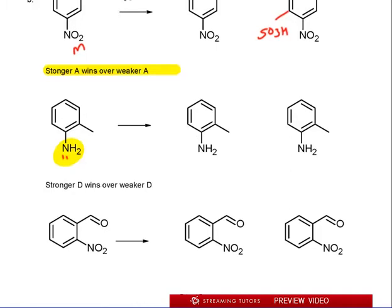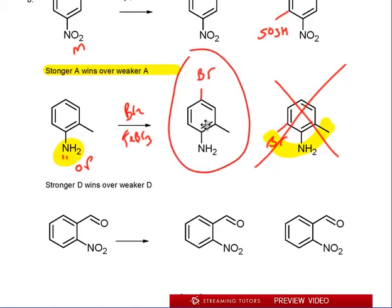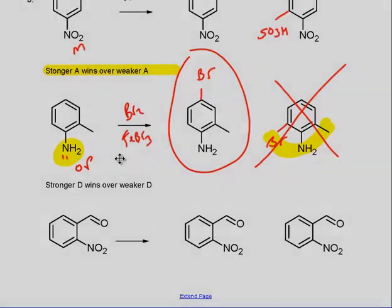So now to answer this question, it's an ortho para director. So we're going to go either, let's do Br2 this time, FeBr3. So we're going to put a Br here or there. Now think about what I did. Here are the two possibilities, but this one is not going to happen, and I hope you see why. You don't line up three groups. You never do that. So the answer is this right here. This is the one that will happen because there's no three groups lined up. So first thing I said to myself was, okay, this wins and it's got to go ortho or para to it. Ortho is no good, so para is the winner. Hopefully that's clear.